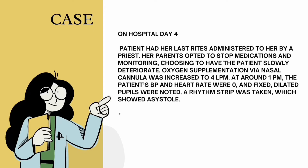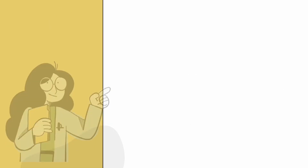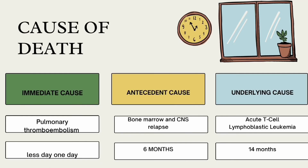At around 1 PM, the patient's pulse and heart rate were zero and fixed dilated pupils were noted. A rhythm strip was taken which showed asystole. The patient expired. The immediate cause of death was pulmonary thromboembolism with duration of less than one day. The antecedent cause of death was bone marrow and CNS relapse with duration of six months. The underlying cause of death was acute T-cell lymphoblastic leukemia with duration of 14 months.